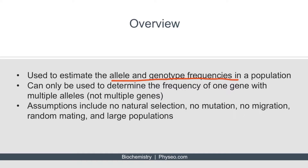The Hardy-Weinberg Principle is used to estimate the allele and genotype frequencies in a population. Don't get this confused with linkage equilibrium and linkage disequilibrium, which are used when you're trying to determine the frequency of alleles associated with two or more genes. The Hardy-Weinberg Principle is used to determine the frequency of one gene that has multiple alleles.